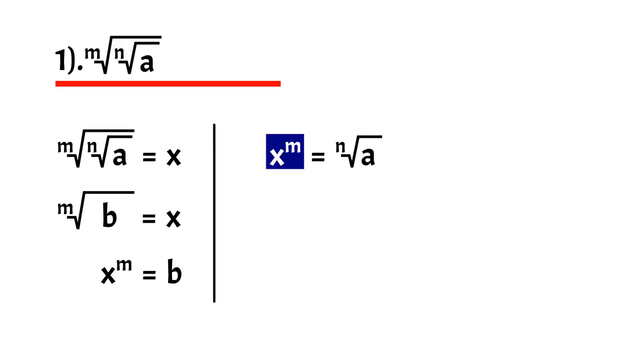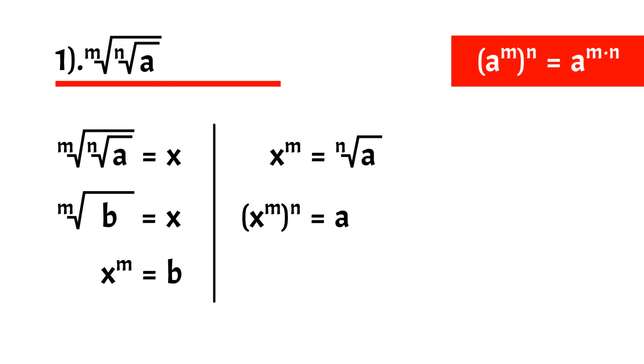Now regard x to the m as unit and change this root expression to exponentiation. So we have the unit to the n equals a, and using the third property of exponentiation, we have x to the m times n equals a.